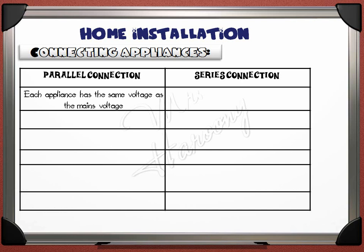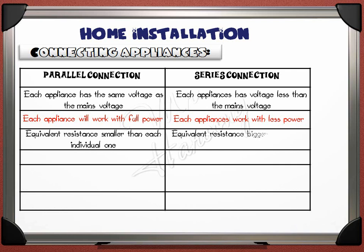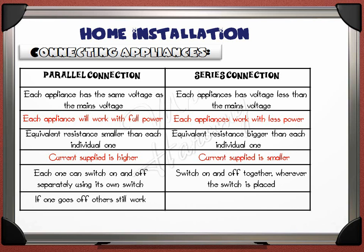We can collect all these points in a comparison table. In parallel: each appliance has the same voltage as the mains voltage, works with full power, equivalent resistance is smaller than each individual one, current supplied is higher, each one can switch on and off separately, and if one goes off others still work. In series: each appliance has voltage less than the mains voltage, works with less power, equivalent resistance is bigger, current supplied is smaller, they switch on and off together wherever the switch is placed, and if one goes off the others also go off.